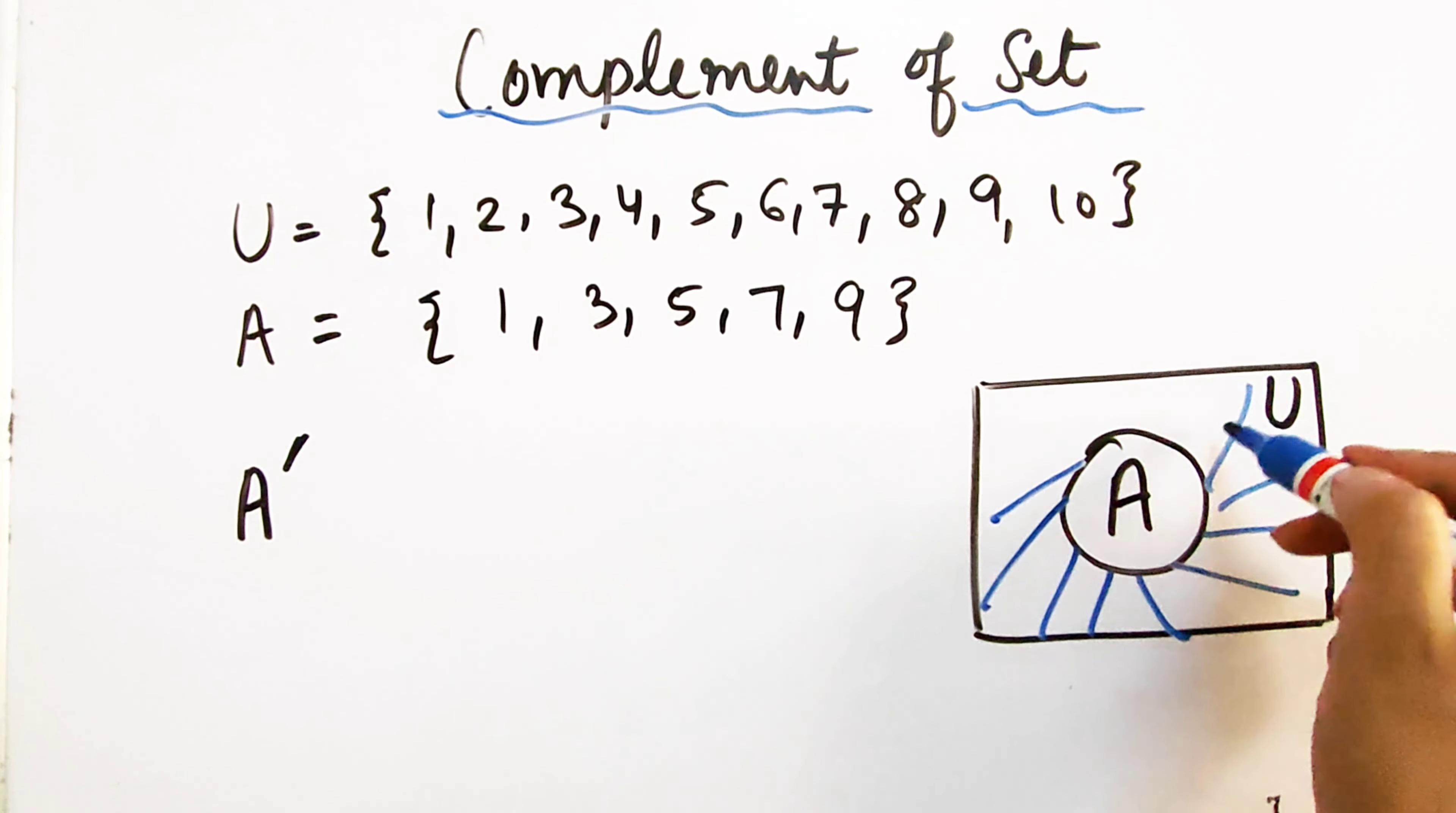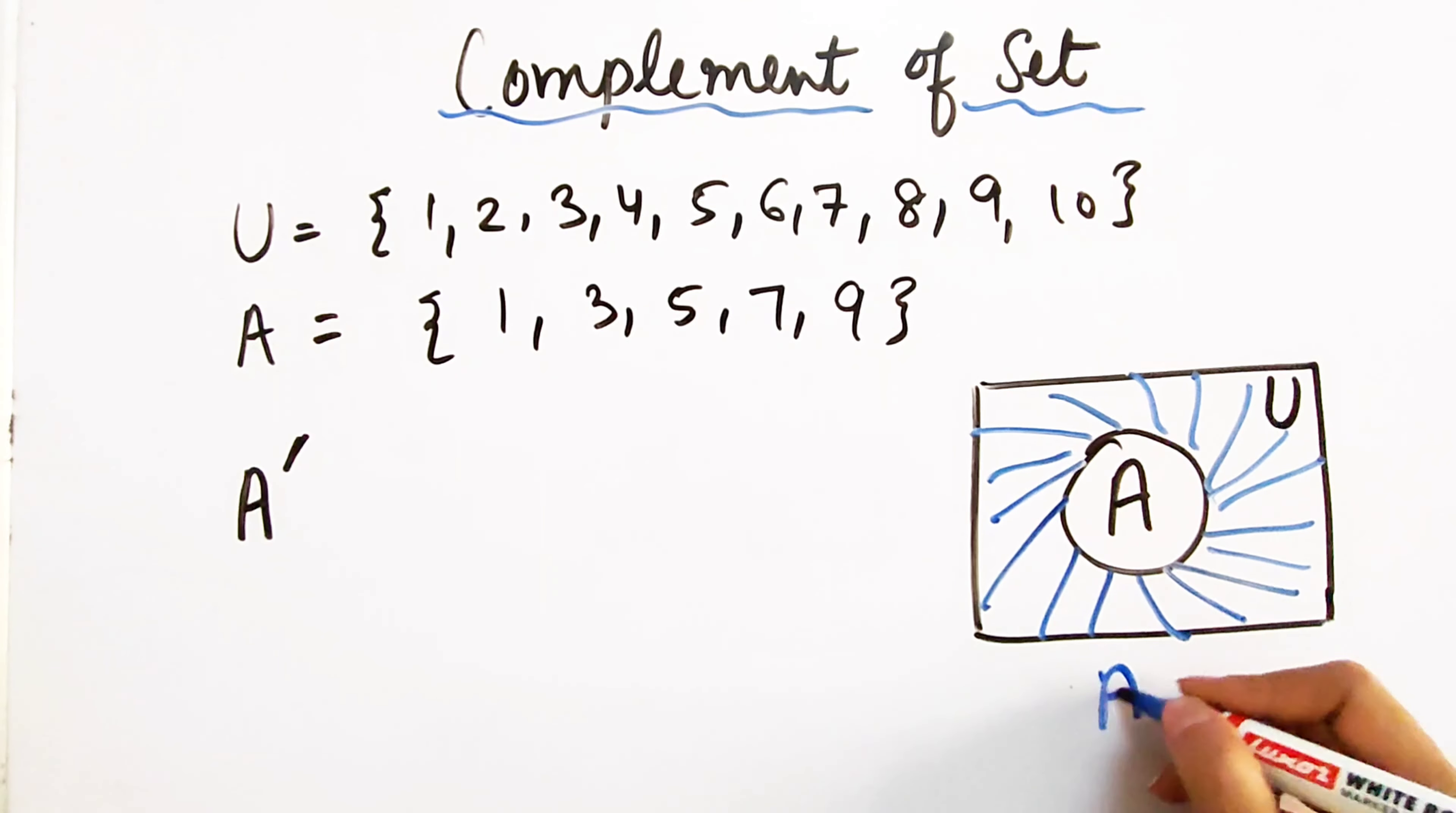What will it be? It will be the same, it will be U minus A. So, what is the shaded portion? What is A complement?